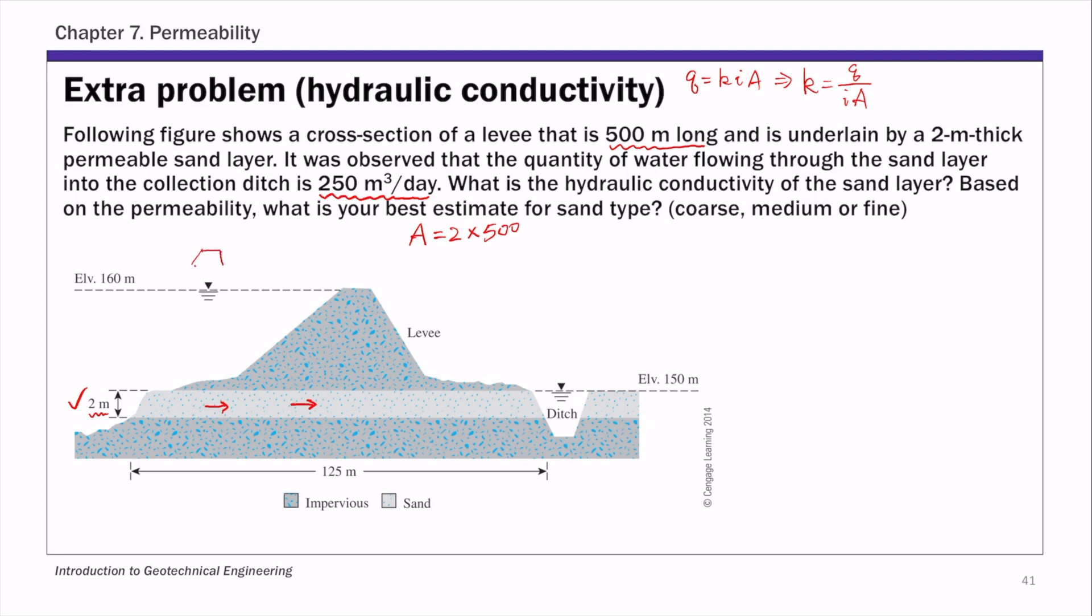This is the cross-sectional area A, which is 1,000 square meters. So we got that A.